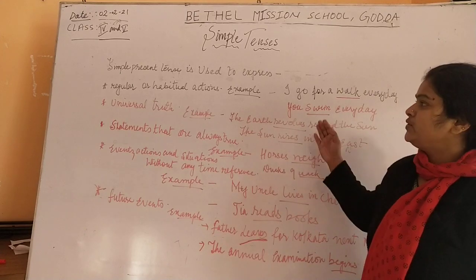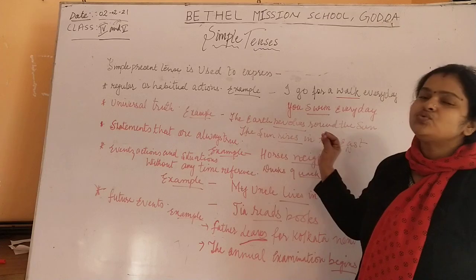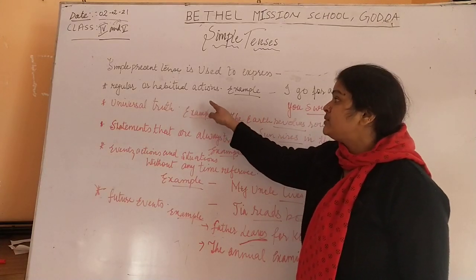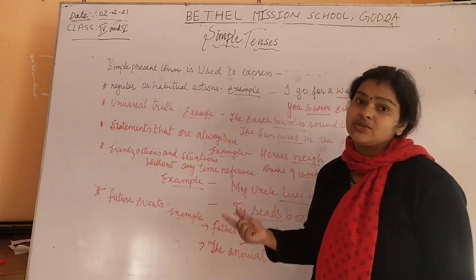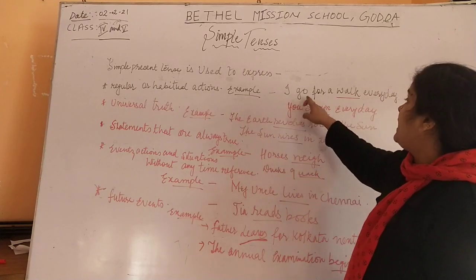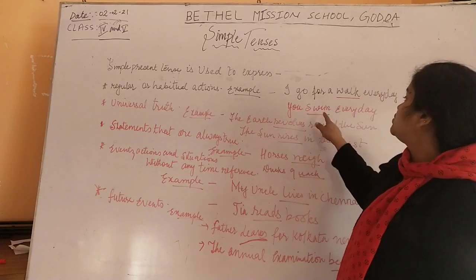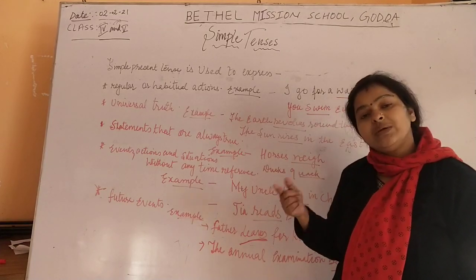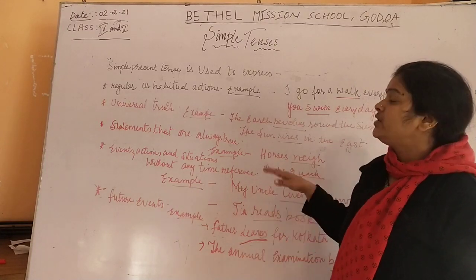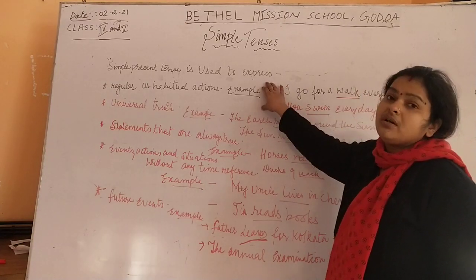Now I will explain where simple present tense is used. Simple present tense is used to express, point number one, regular and habitual actions — the actions which are regular, which are in habit, in practice. For example: I go for a walk every day. You swim every day — which is a continuous process you are doing every day, a regular habit. So the present tense is used to show regular and habitual actions.